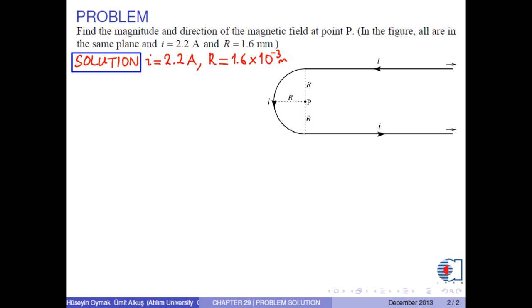Let us enumerate the wires as 1, which is semi-infinite line, 2, which is circular arc, 3, which is again semi-infinite line.